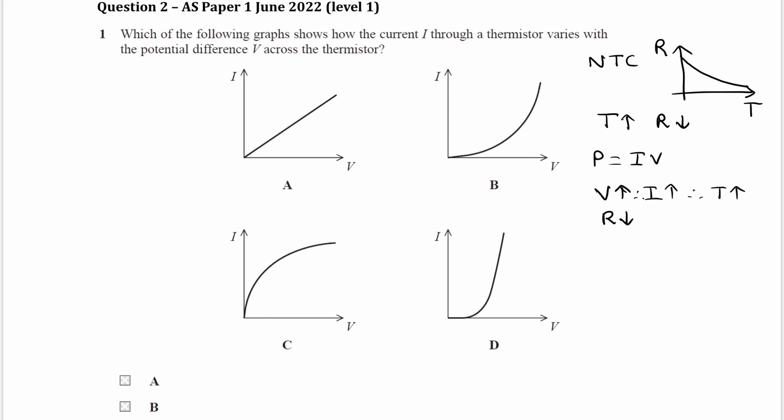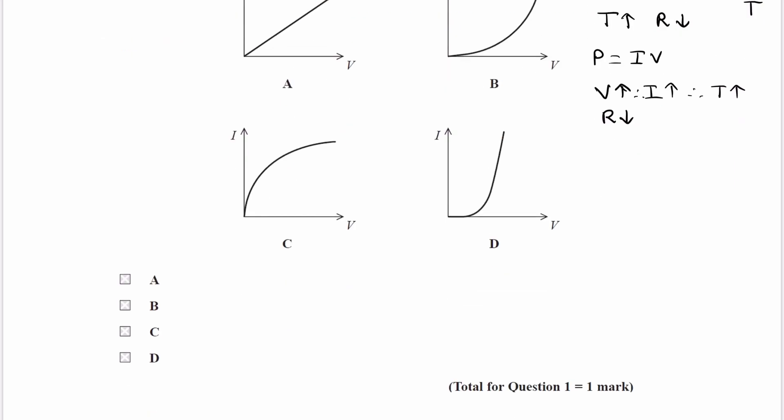So then if the resistance is falling as we progress across this graph or these graphs, then what should be happening is as we have fixed increments in voltage or fixed increases in voltage, the yielding current should be getting bigger and bigger if the resistance is falling. And that's shown by B. So B is our answer.